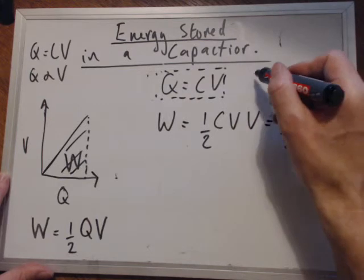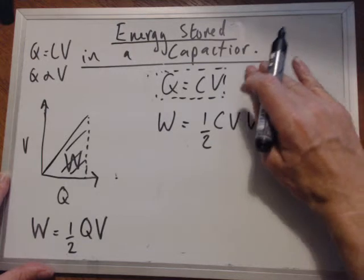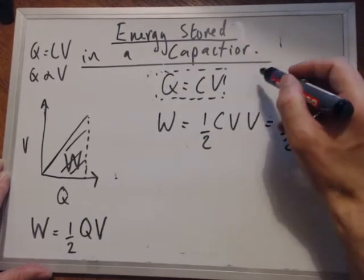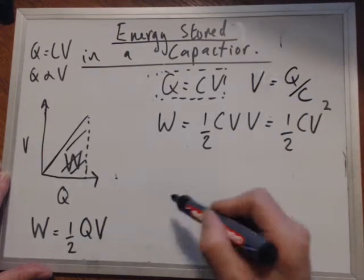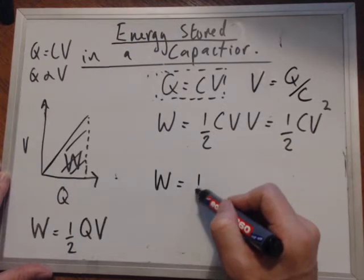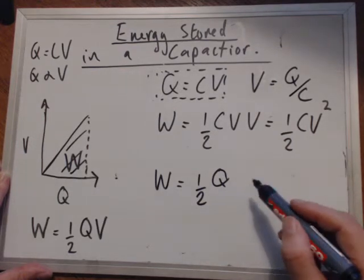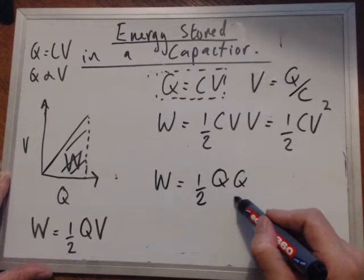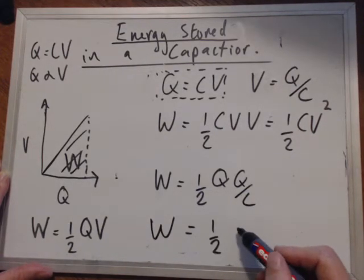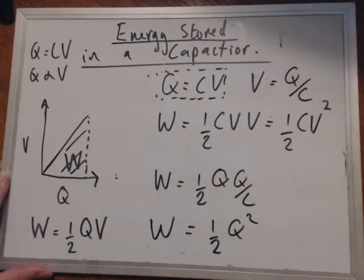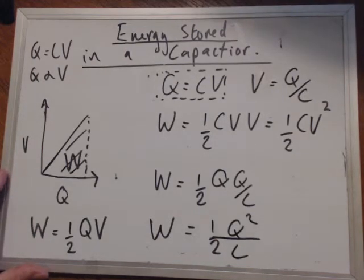Or we can use this equation again. We'll find that the voltage, the potential, is equal to Q over C. So we can rewrite this one here as work is equal to half Q multiplied by V, which is Q over C, so times Q over C. So the other equation would be equal to W is equal to a half Q squared over 2C. So the equations we have are this.